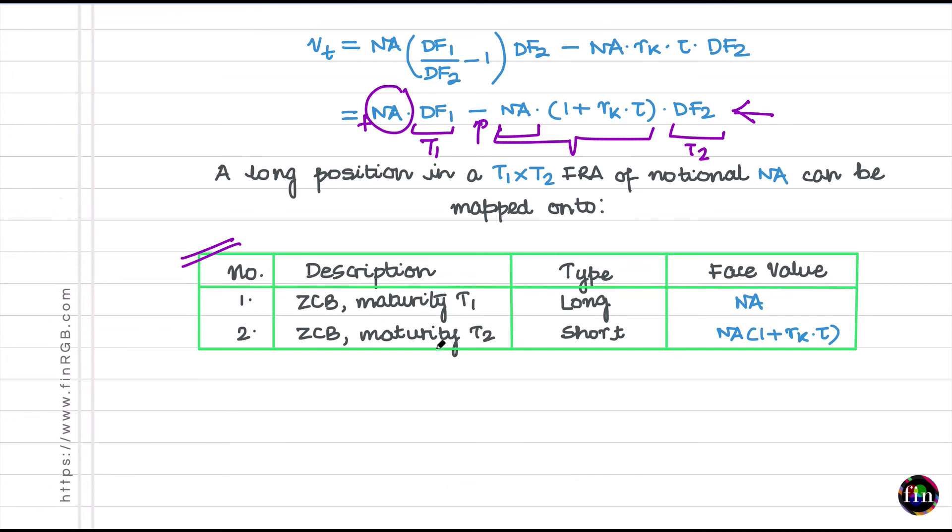As a rule of thumb remember this: a long position in T1 cross T2 FRA of notional NA can be mapped onto a long position in a ZCB of the near maturity which is T1, the face value required same as the notional of your FRA, and a short position in another ZCB which is of maturity T2, the more distant time T2, of face value NA times 1 plus RK tau this time.